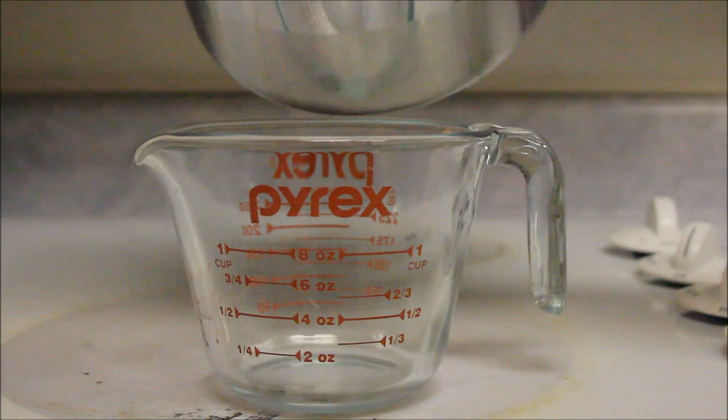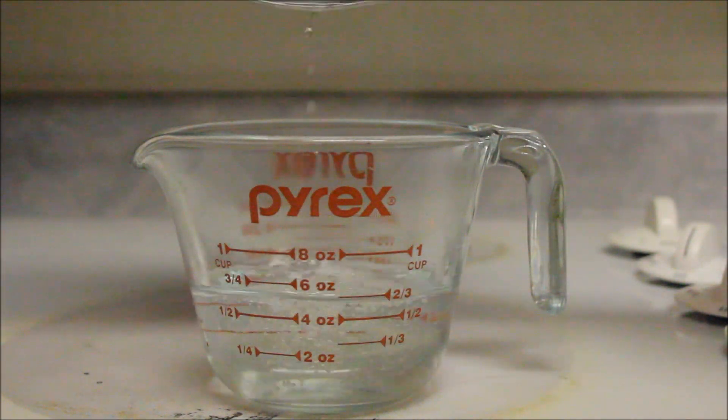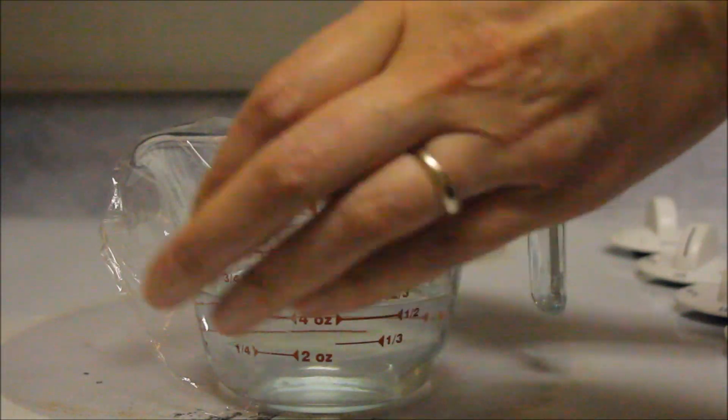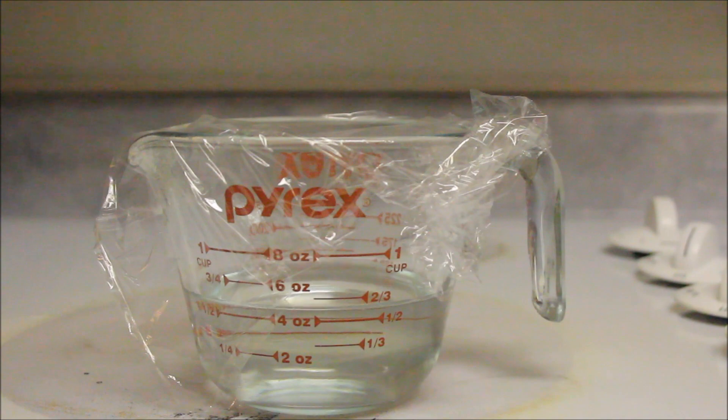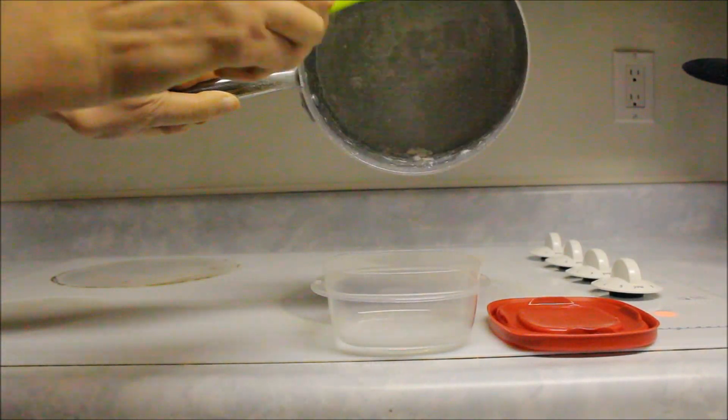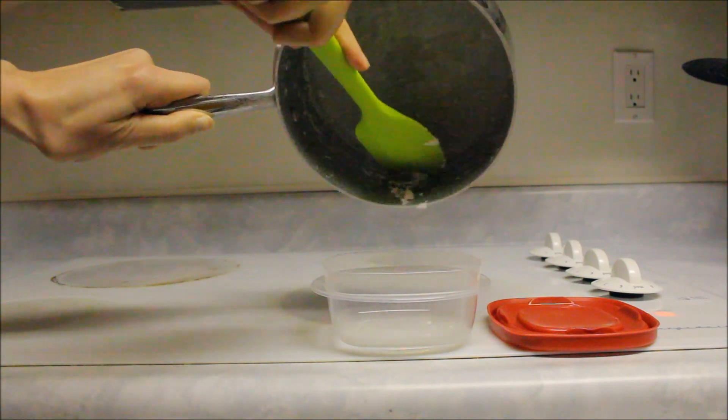Once the solution has reduced, pour it in a measuring cup or a glass jar. Scrape the inside of the pot and save some of the compound for the experiment later.